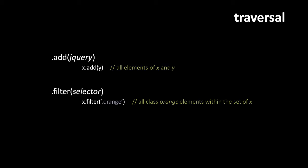The filter method takes a selector string, which it uses to create a new jQuery object representing that subset of the existing jQuery object. So calling x.filter('.orange') returns a new jQuery object containing all elements found in x which are members of the class orange.